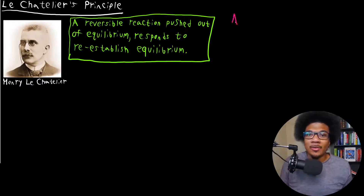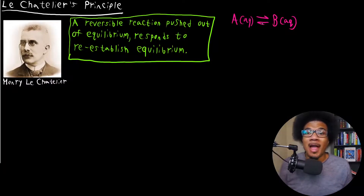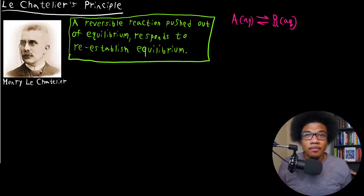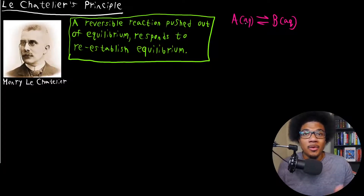Let's take a general example. Say we have an aqueous solution A in a reversible reaction with aqueous solution B. Once equilibrium is established, you can knock the system out of equilibrium by changing the concentration of either A or B. If you increase the concentration of B, the system is going to fight to reestablish equilibrium by shifting to produce more A. Conversely, if you increase the concentration of A, it will try to produce more B to reestablish equilibrium.